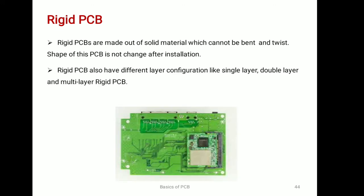Rigid PCBs — as the name suggests, these PCBs are made out of solid material which cannot be bent or twisted. They also come in single, double and multi layer configurations. The simplest in design and most manufactured PCB is the single sided PCB. Multi layer PCBs contain up to 9 to 10 layers to be more compact.